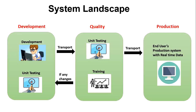As everyone can see in this diagram, the first server is the Development server. Here, functional consultants can do all their configuration work, and ABAP, BI, BW, and technical teams can do all their coding in this server. Unit testing is also carried out here. Once development is completed, both teams will save their changes in the TR, which is the Transport Request. The TR is used for moving all changes from one server to another.